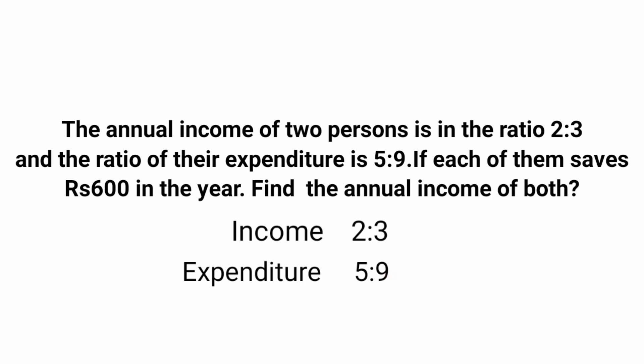Since both save rupees 600, we need to make this difference equal. Find the difference of the income ratios: 3 minus 2 equals 1. The difference of the expenditure ratios: 9 minus 5 equals 4. Multiply the first income ratio 2:3 by the difference of the second ratio (4) to get 8:12. The second expenditure ratio 5:9 is multiplied by the difference of the first ratio (1), so it stays 5:9.